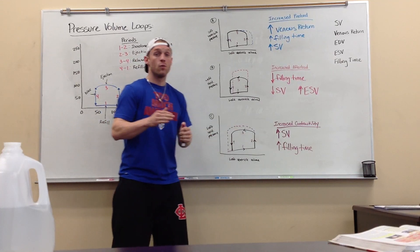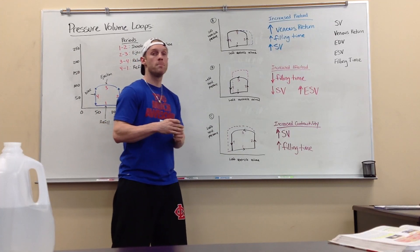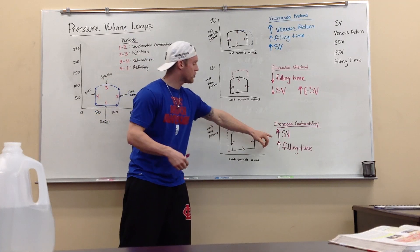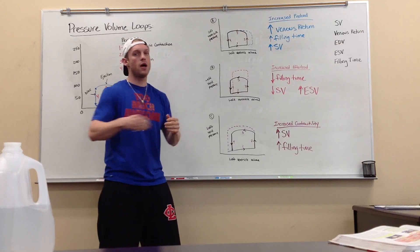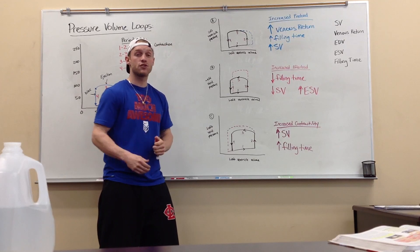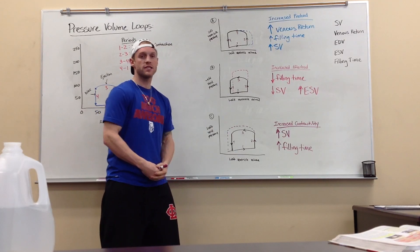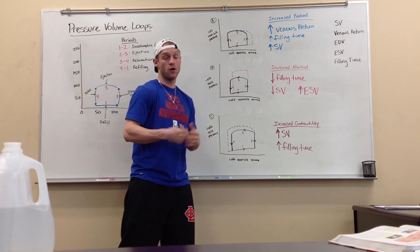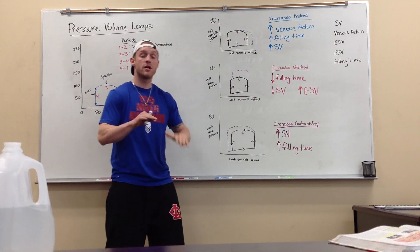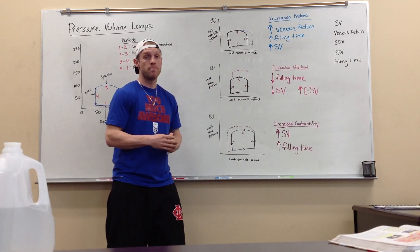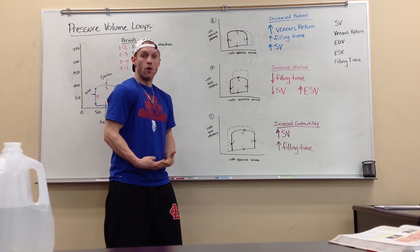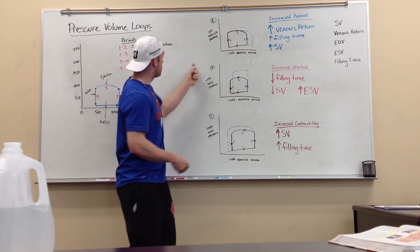That's why trained versus untrained people differ — stroke volumes are greater in trained people because they have a stronger contraction and the ability to pump more blood out. Usually in athletes, an increase in stroke volume means a lower heart rate because the heart doesn't have to work as hard. In an untrained person, stroke volume and heart rate are more even during exercise, whereas an athlete trains their body so the heart doesn't have to work as hard but does more — it's more efficient.